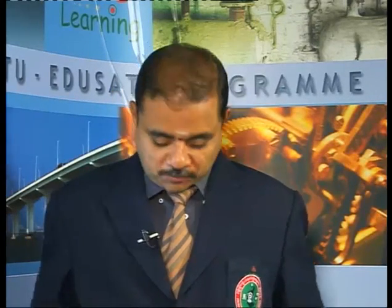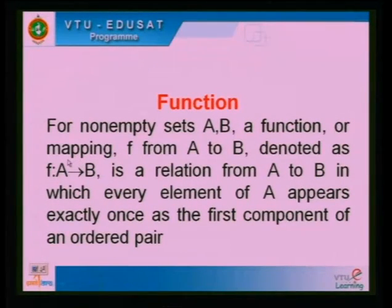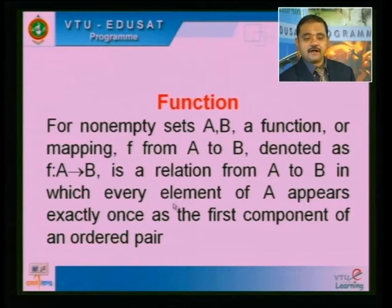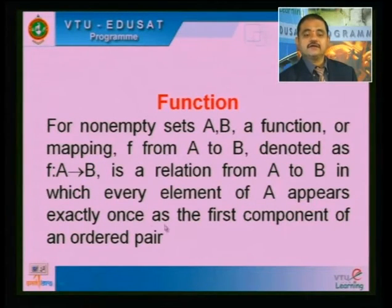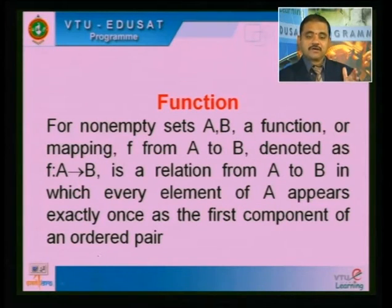Yesterday we also had a brief introduction about functions. For non-empty sets A and B, a function or mapping F from A to B is a relation from A to B in which every element of A appears exactly once as the first component of an ordered pair. This is the most important condition. So from cross product to relation, from relation to function.